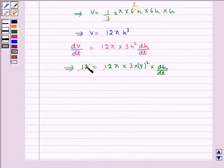When 12 gets cancelled, it implies dh/dt = 1/(π × 3 × 4²). That is, 12 × 4 = 48.